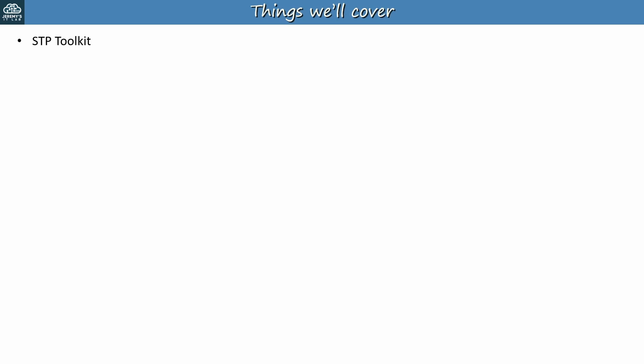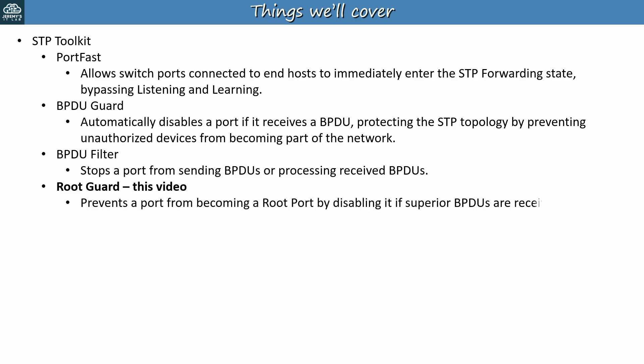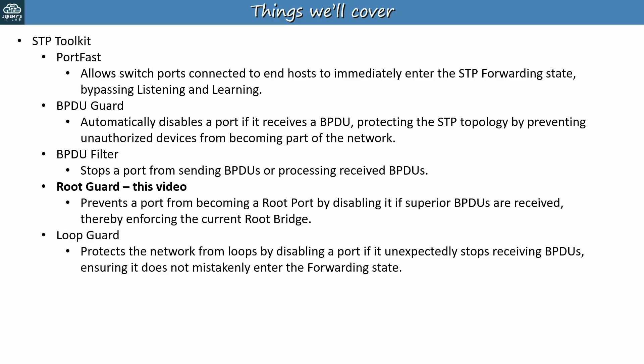Here's what we'll cover. This is the third video in the STP toolkit section of this course. We've already covered PortFast, BPDU Guard, and BPDU Filter in the previous few videos. And now we're moving on to RootGuard, which prevents a port from becoming a root port by disabling it if superior BPDUs are received, thereby enforcing the current root bridge. This can be very useful when connecting your LAN to another LAN that you don't have direct control over. There's also one more feature in the toolkit that you need to know for the CCNA: LoopGuard. We'll cover that in the next video.